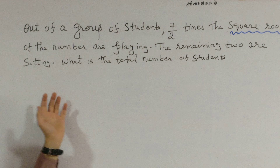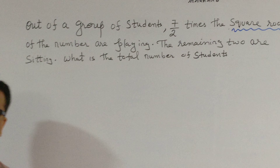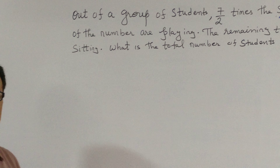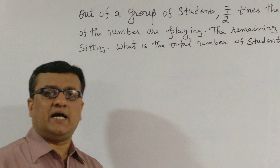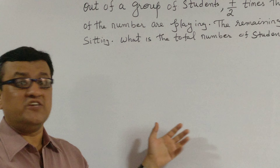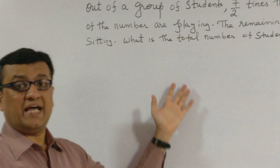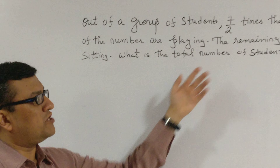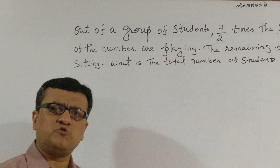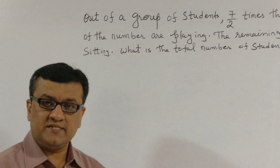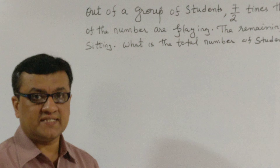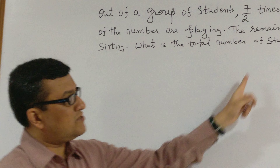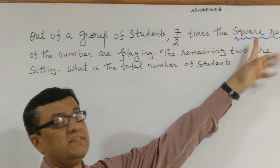This sum is slightly different from other normal word problems. Normally in any quadratic sum we always assume the parameter we need to find as x. So if we need to find the total number of students, normally we go with 'let the number of students be x.' But in this particular sum we shall not use that method, because of the word 'square root' being there.